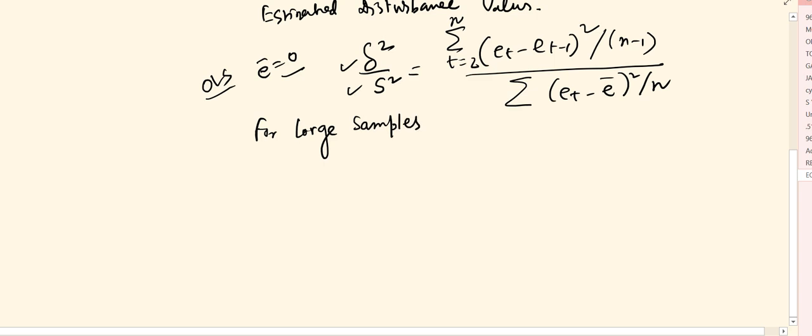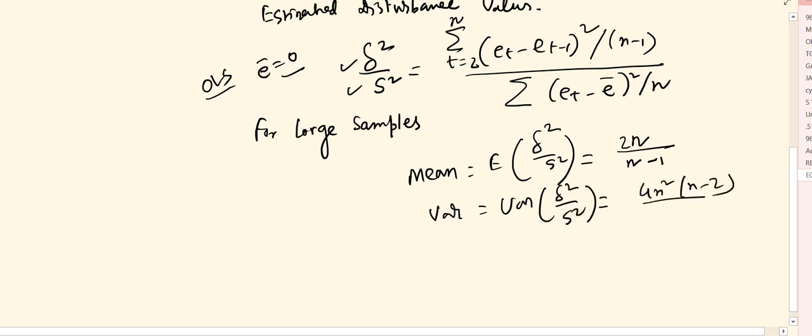The mean equals the estimated value of sigma square by s square, which equals 2n by (n minus 1). The variance of sigma square by s square equals 4n squared divided by [(n minus 2)(n minus 1) squared].